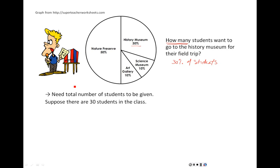If, instead, we were told that there were 30 students in this class, now we would have enough information to actually be able to figure this out. We know that 30% of them want to go to the History Museum, so 30% of the 30 students want to go to the Museum. Now it's just a matter of remembering a few of our percentage things.